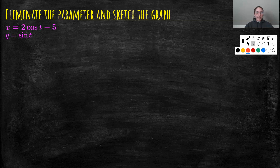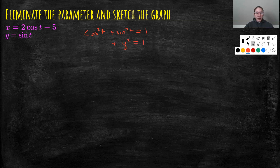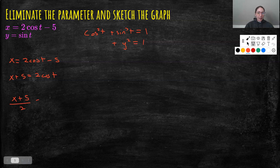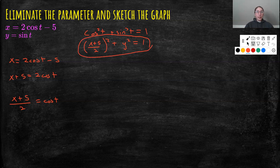What if it's a bit more complicated — say x = 2cos(t) - 5 and y = sin(t)? Cosine and sine still relate via cos²(t) + sin²(t) = 1. Since y = sin(t), we already know that term is y². For cos(t), I solve the x-equation: add 5 to both sides, divide by 2, giving cos(t) = (x + 5)/2. Substituting in: ((x+5)/2)² + y² = 1. That's the algebraic form — eliminated the parameter by solving for cosine and plugging it in.